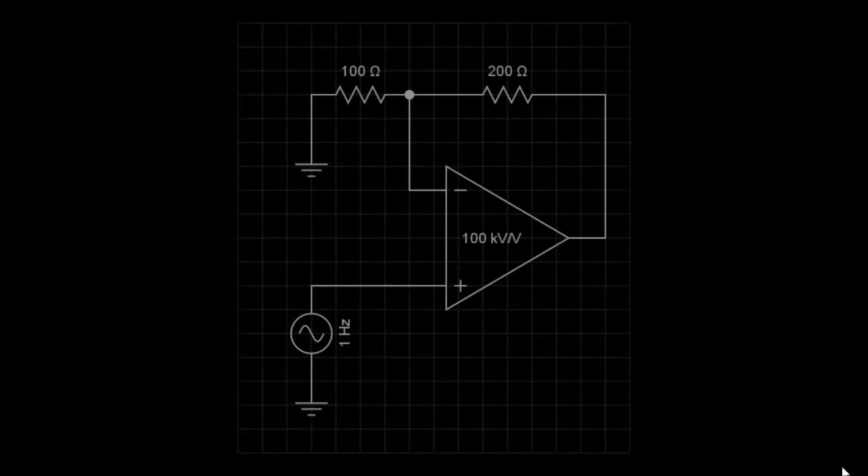The amount of gain is controlled by the resistors. We will examine the circuit, then look at the formula to calculate the output voltage and gain.